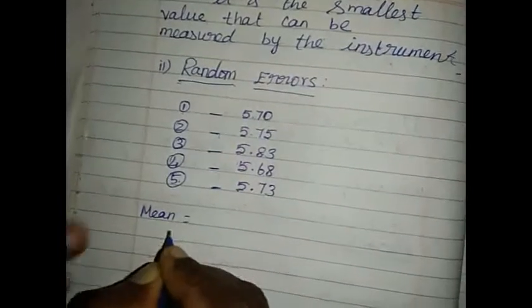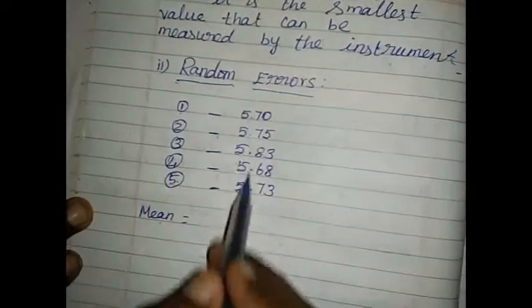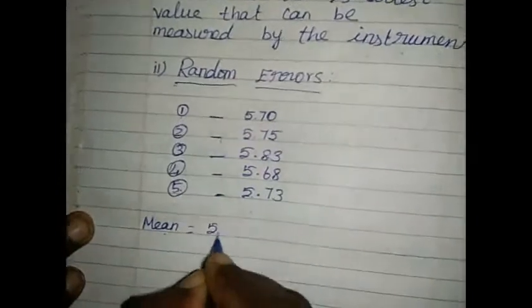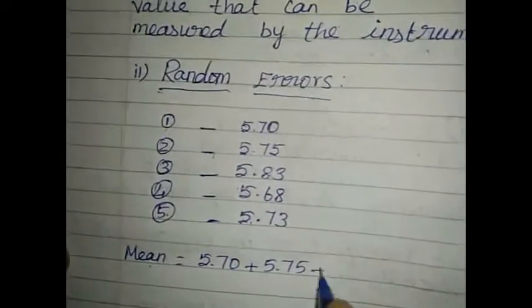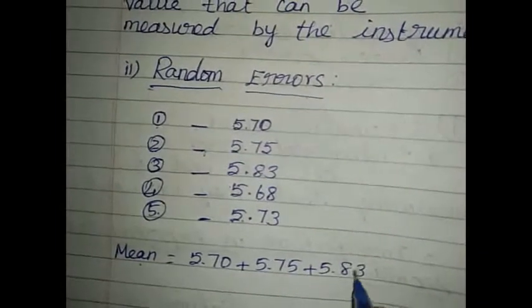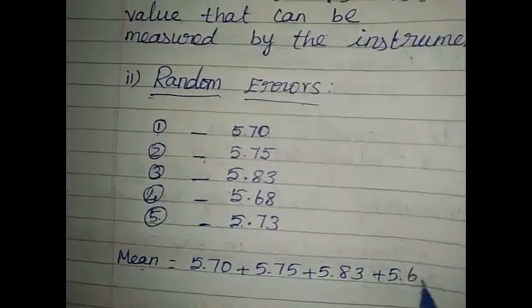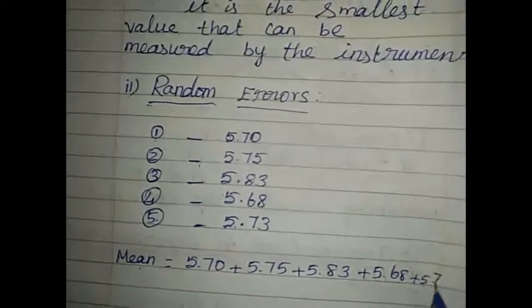Mean is equal to, how can we find mean value? Add these 5 numbers: 5.70 plus 5.75 plus 5.83 plus 5.68 plus 5.73.